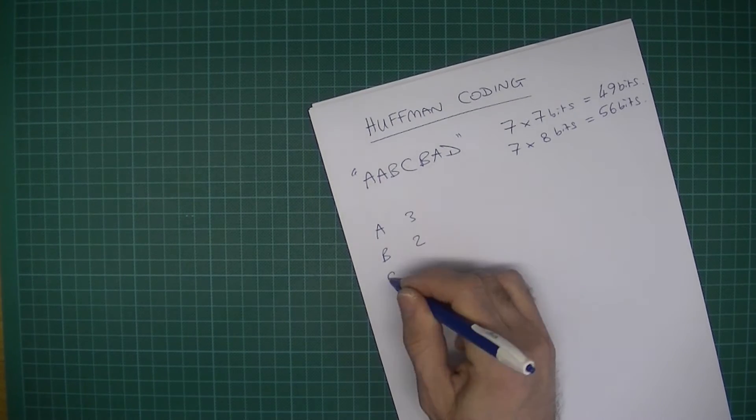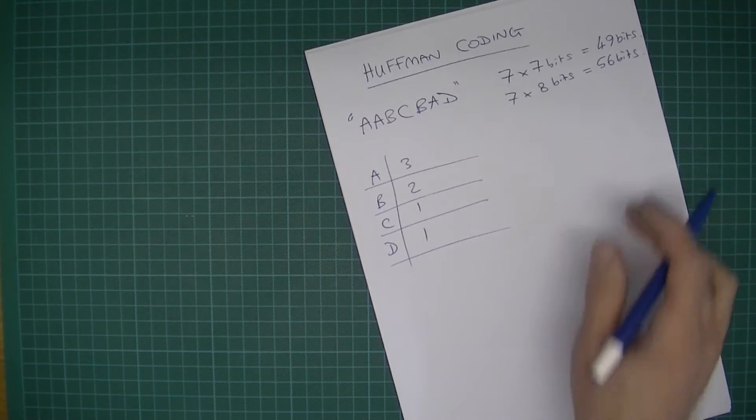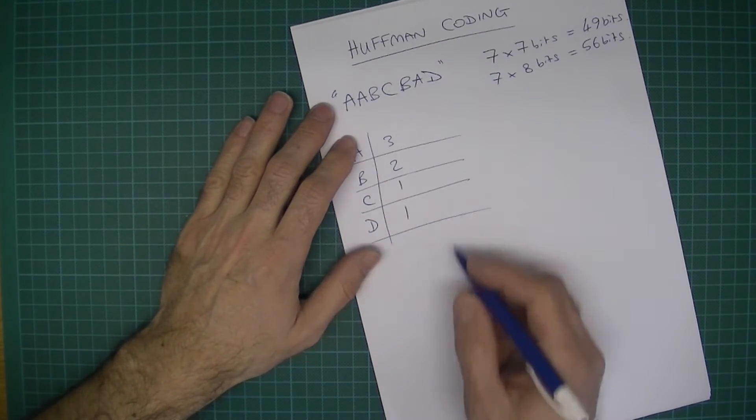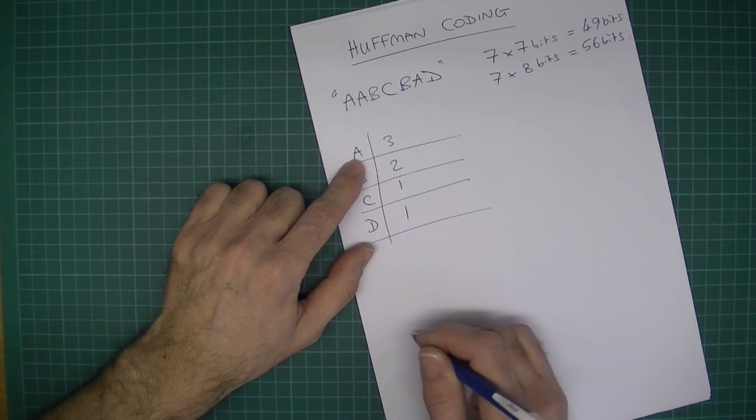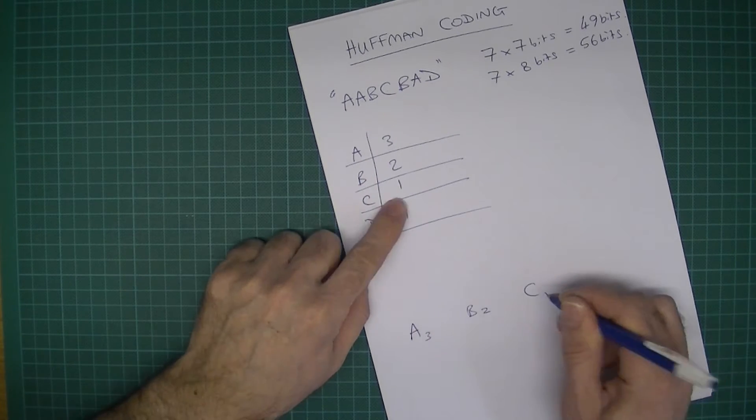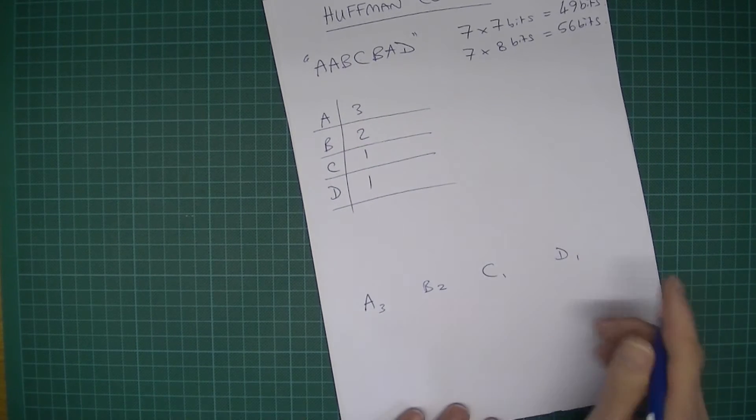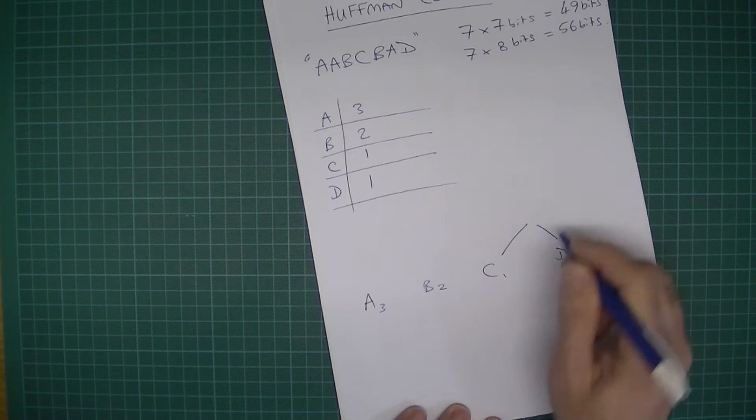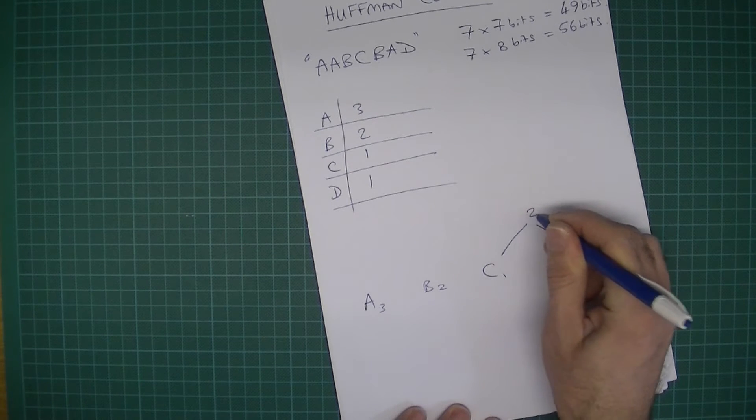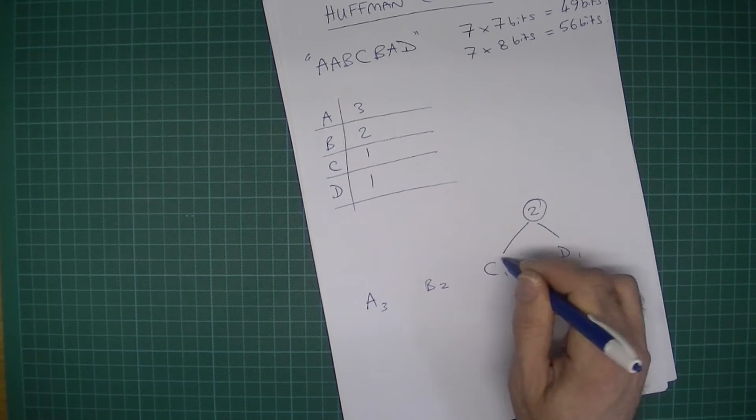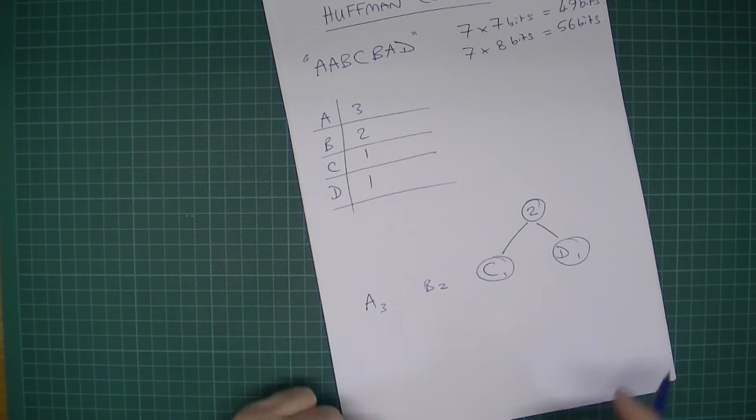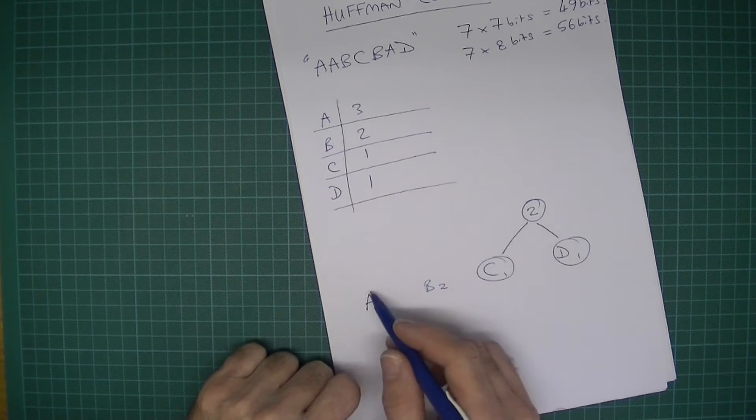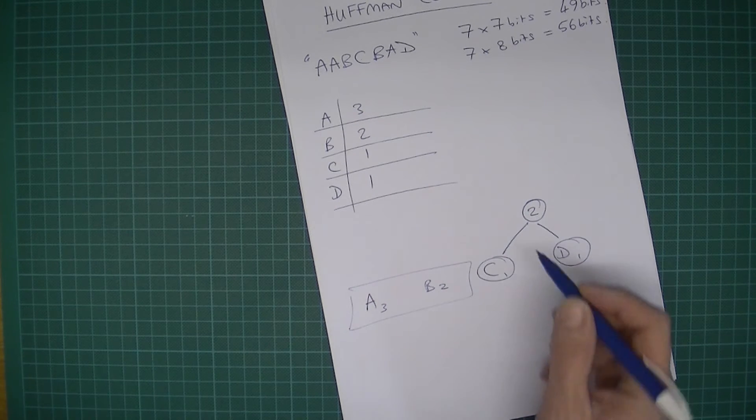The next thing that I do, I need to write these out in order of frequency, on the left the most frequent. Then starting with the least frequent ones, I join them to make a new node. One plus one is two, so that's now a new node, and these things are what we're going to call leaf nodes. This two needs to now be inserted into this thing called a priority queue.